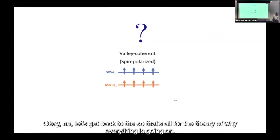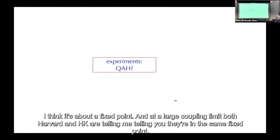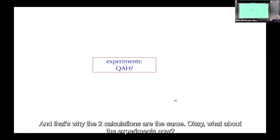That's all for the theory of why everything is going on. I think it's about a fixed point — at large coupling, both Hubbard and HK are telling you they're at the same fixed point, which is why the two calculations agree.